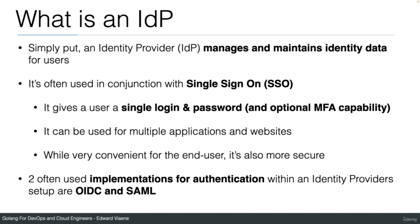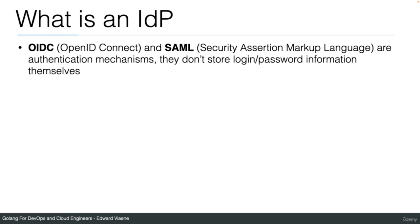Two often used implementations for authentication within an identity provider setup are OIDC (OpenID Connect) and SAML (Security Assertion Markup Language). These are authentication mechanisms — they don't store login and password information themselves.